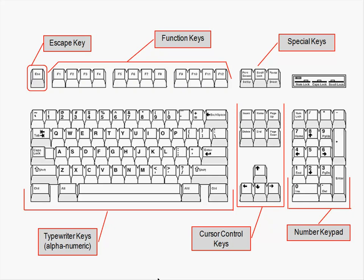There's a Tab key which works like an indent key, and a Caps Lock key which locks capitals just like on a typewriter. On the right side there's an Enter key, similar to the carriage return on an old typewriter. Upper right is a Backspace key to erase letters you just typed. And the large bar at the bottom center is the Space Bar, for putting spaces between words or characters.